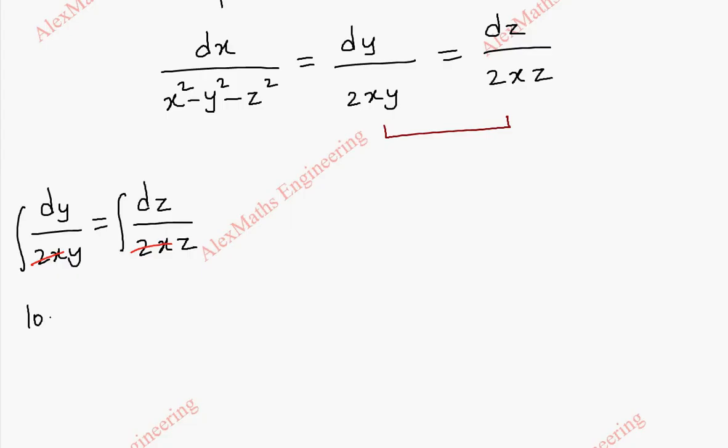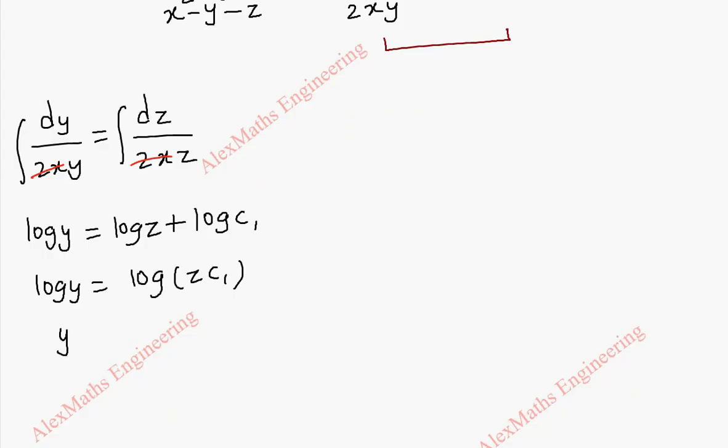we get log y equal to log z plus c1. But since all the terms are log, we shall take the constant as log c1. Using the log rule, this becomes log of z c1. Now removing log on both sides, we get y equal to z c1. So y by z equal to c1.